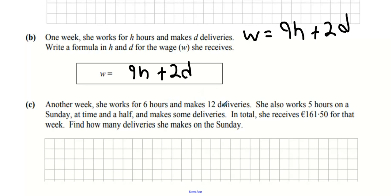Another week she works for 6 hours and makes 12 deliveries. She also works 5 hours on a Sunday at time and a half and makes some deliveries. In total she receives £161.50 for that week. How many deliveries did she make? Let's take out the 6 hours and the 12 deliveries to begin with. 6 multiplied by 9, 54 euro. And your 12 deliveries, 2 multiplied by 12.